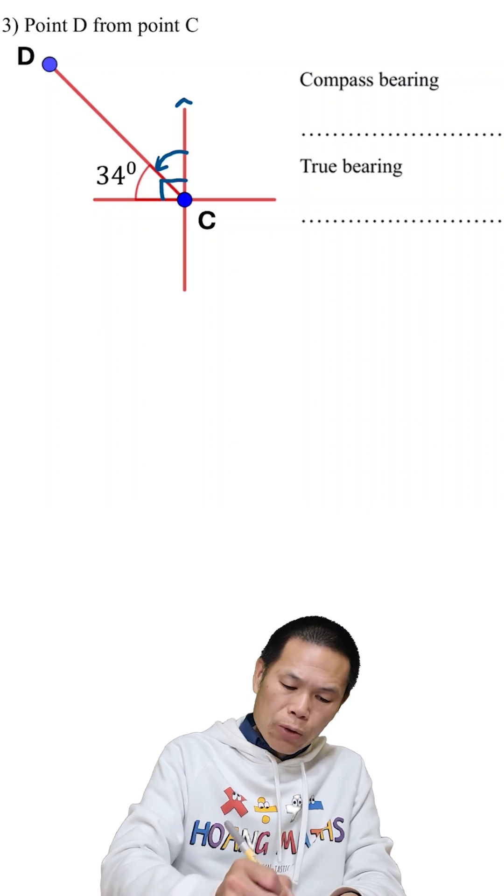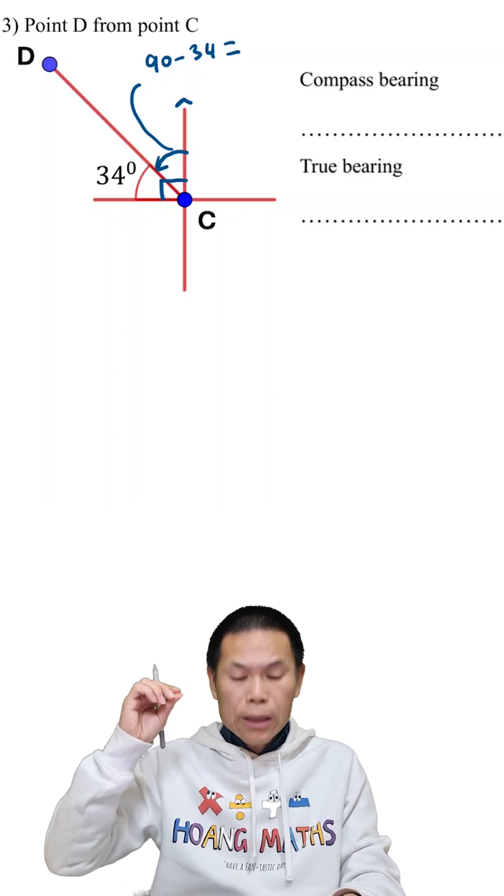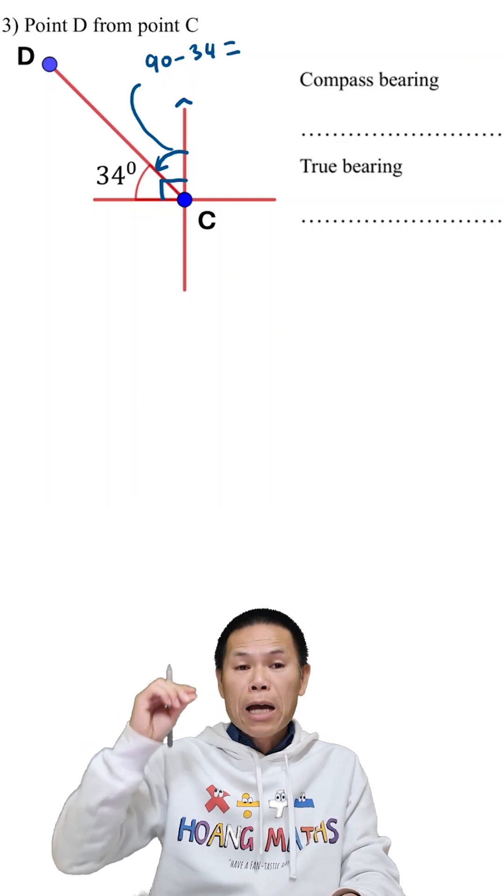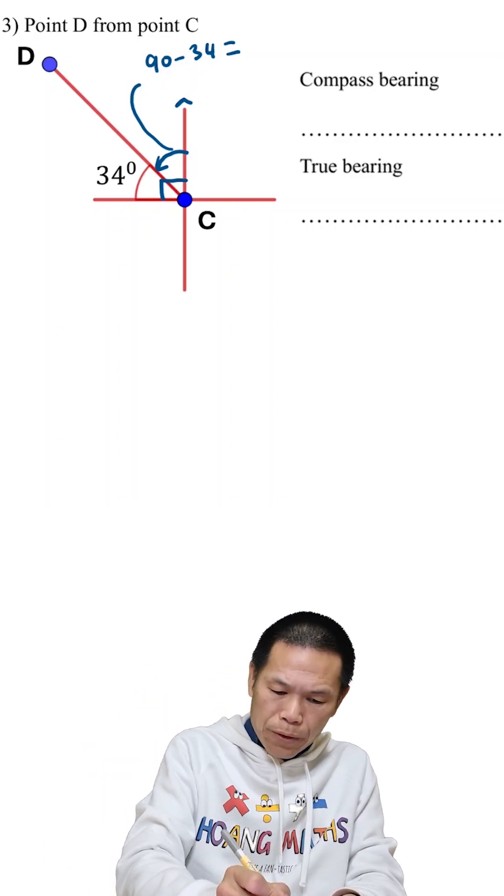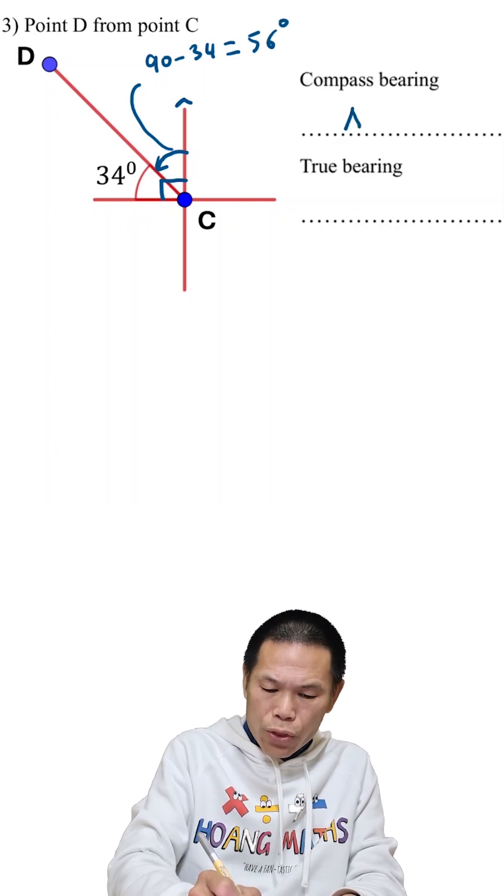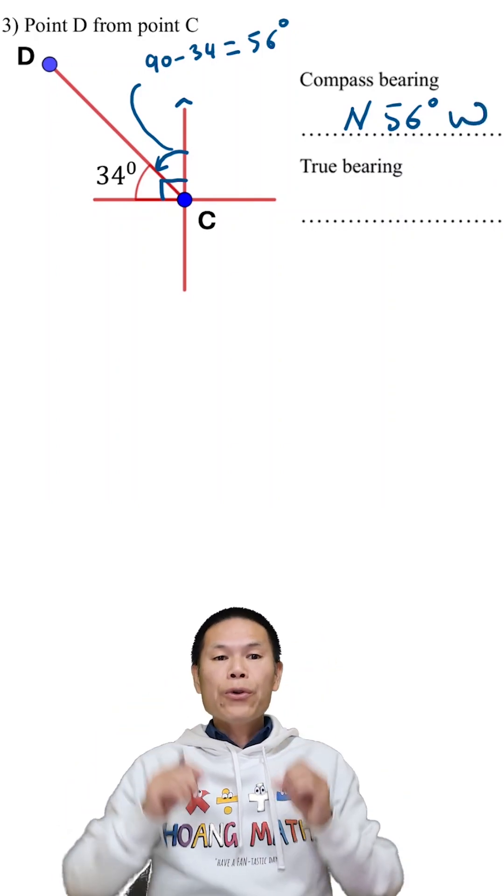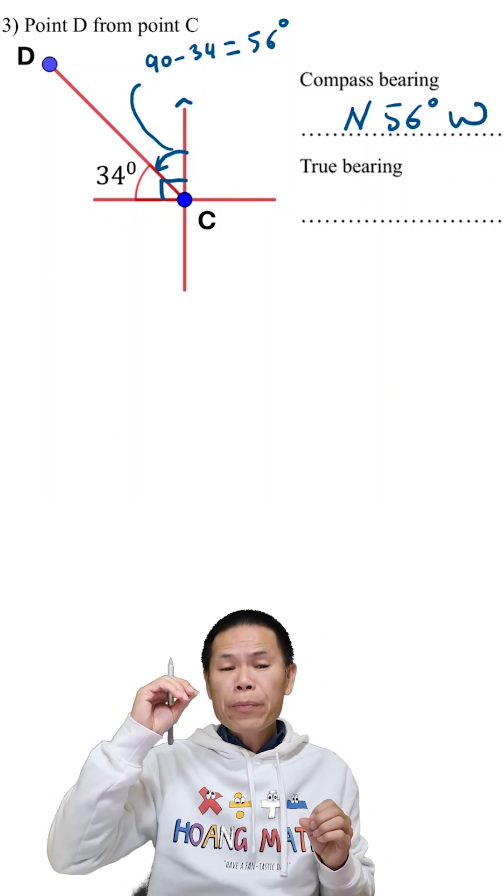So this angle here will be 90 minus 34 degrees. 90 minus 30 is 60, and minus 4, so that is 56. That is north 56 degrees west. Now for the true bearing,